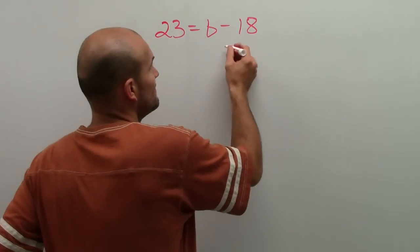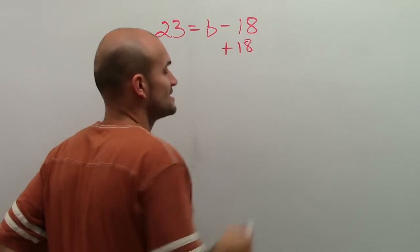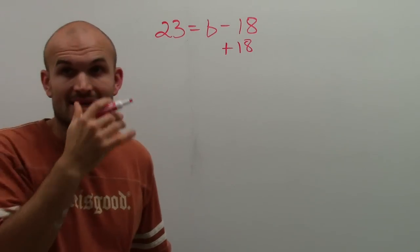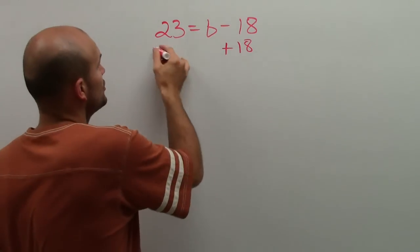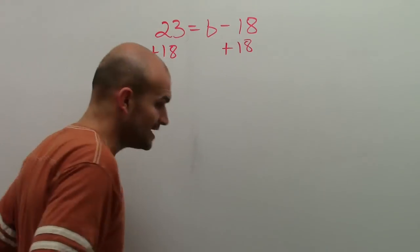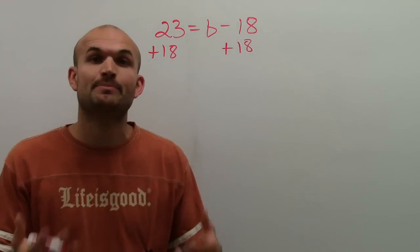So to undo subtraction, the inverse operation of subtraction is addition. So since I'm adding an 18 there, I need to make sure I add an 18 on the other side to show my addition property of equality and to keep equivalent equations.